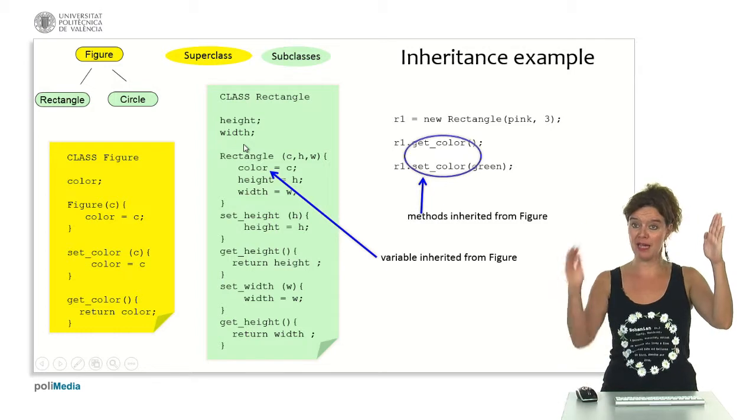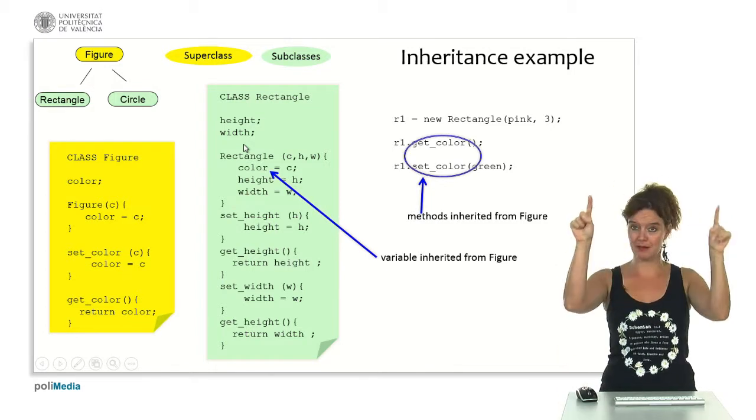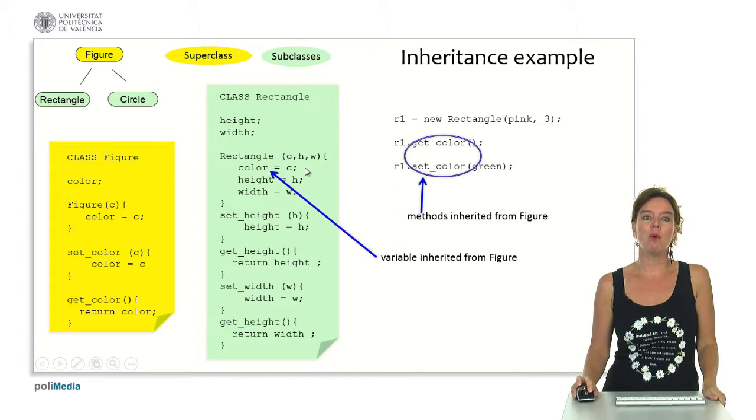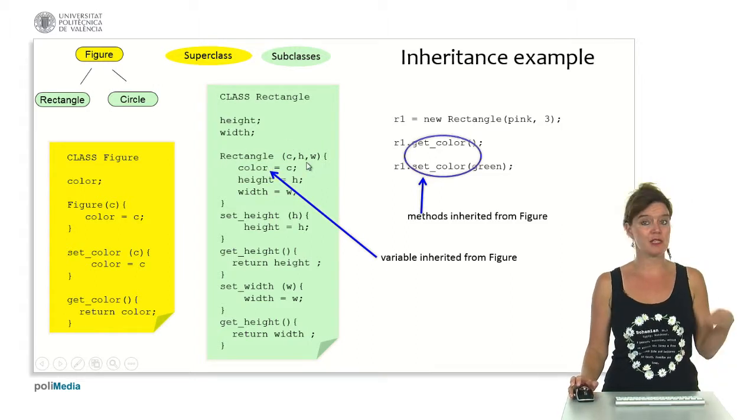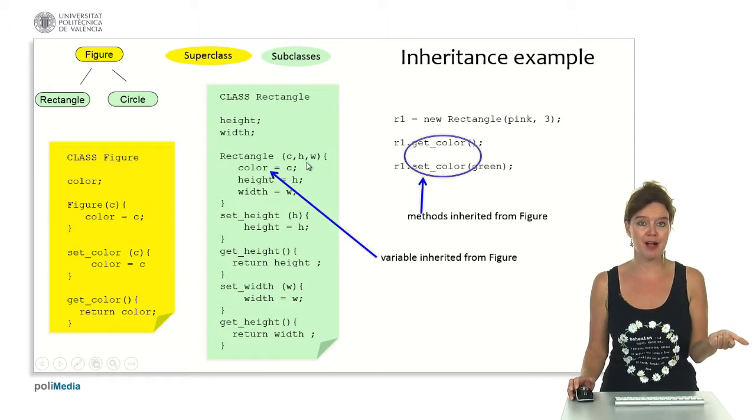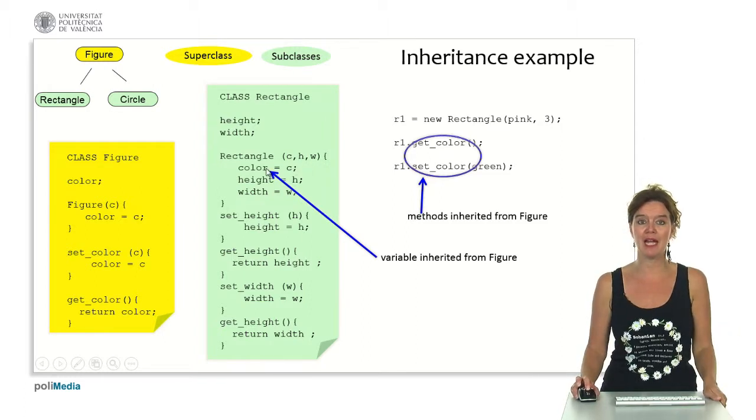Rectangles have a height and a width such that we can define the rectangle. So we make a constructor with three parameters: C for the color, H for the height and W for the width. And we set them here.